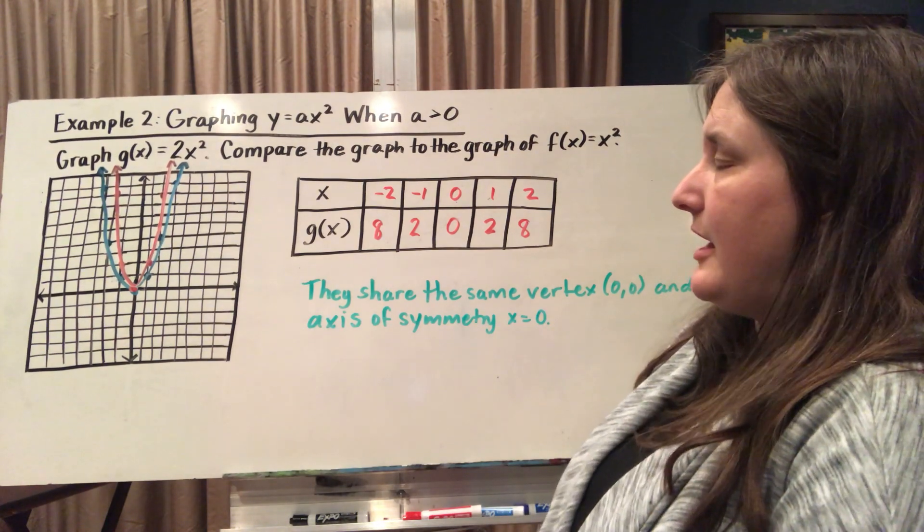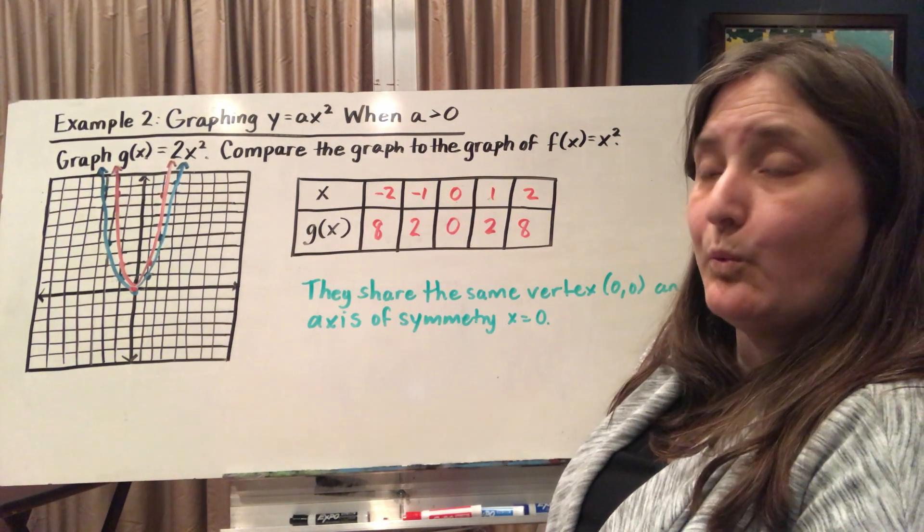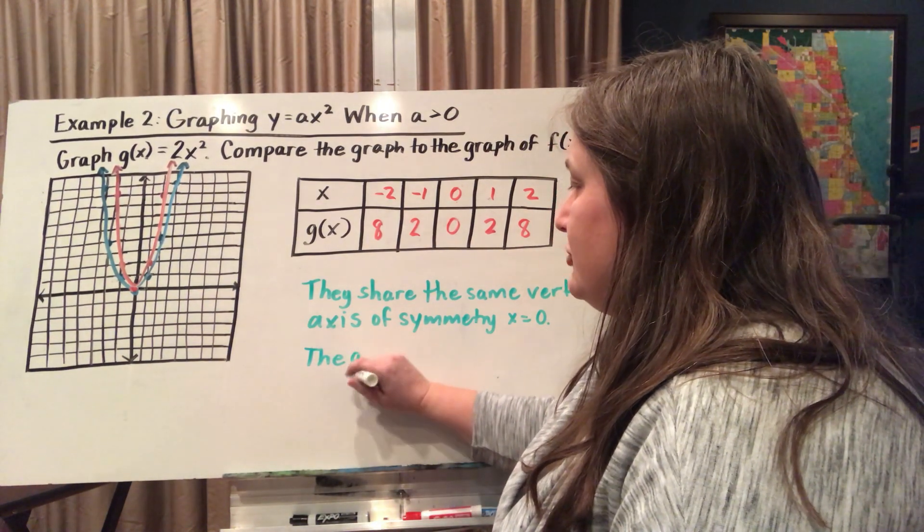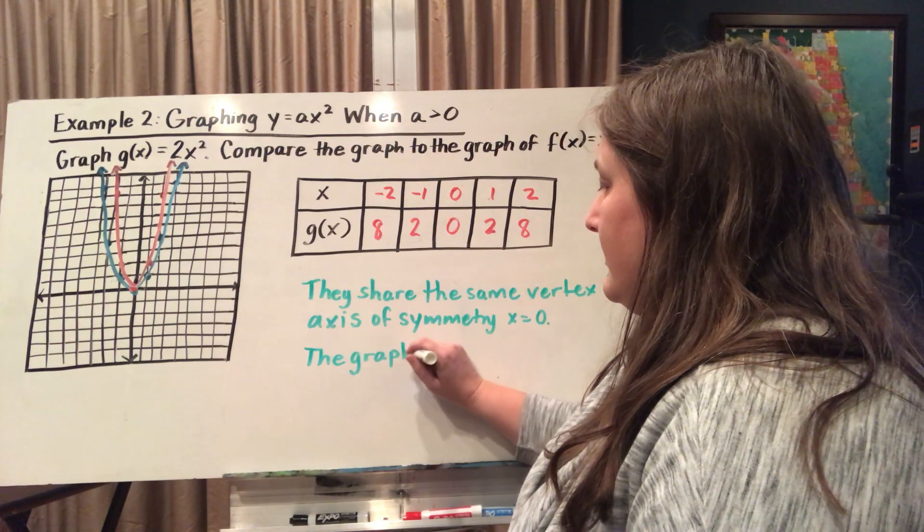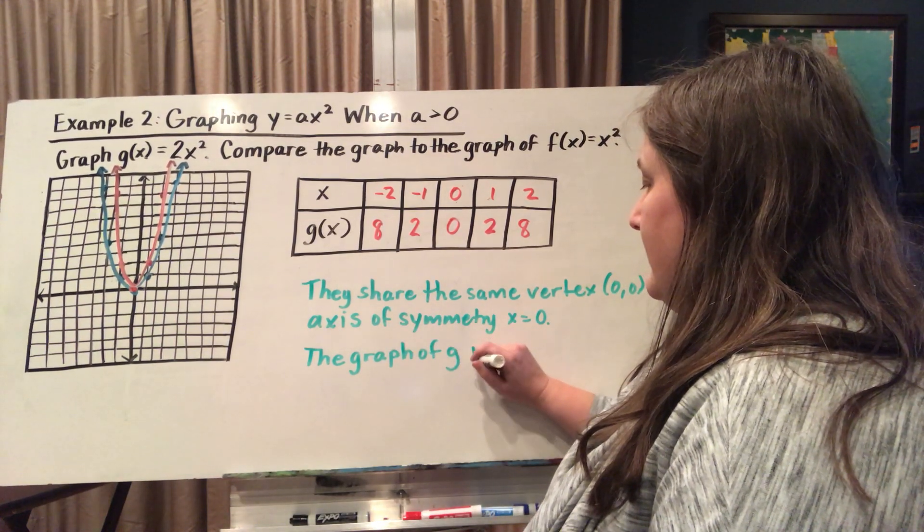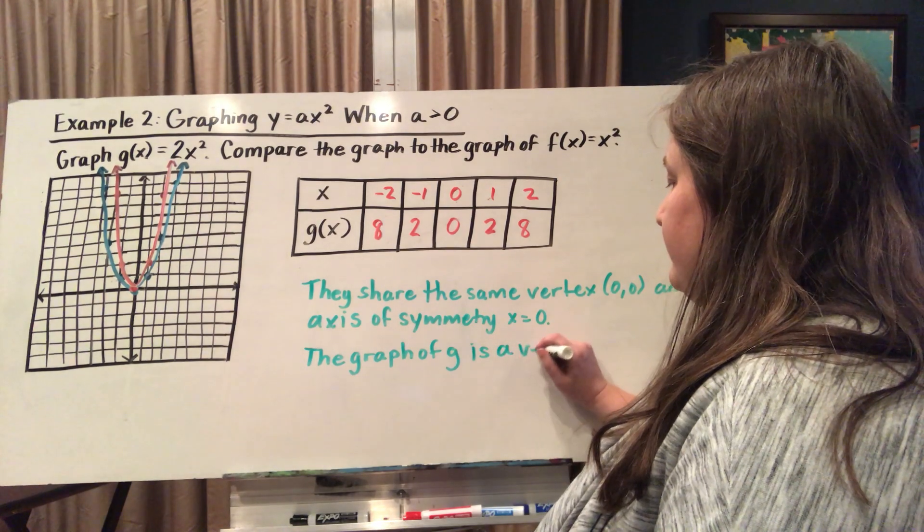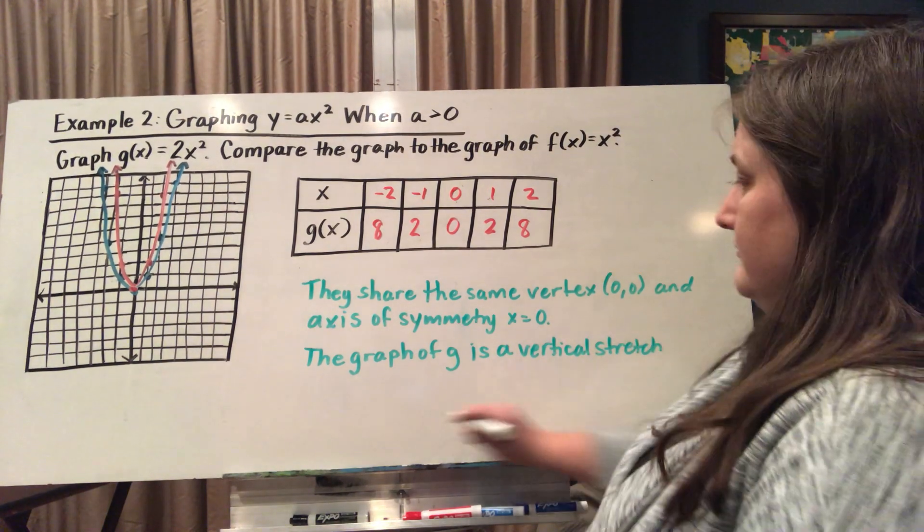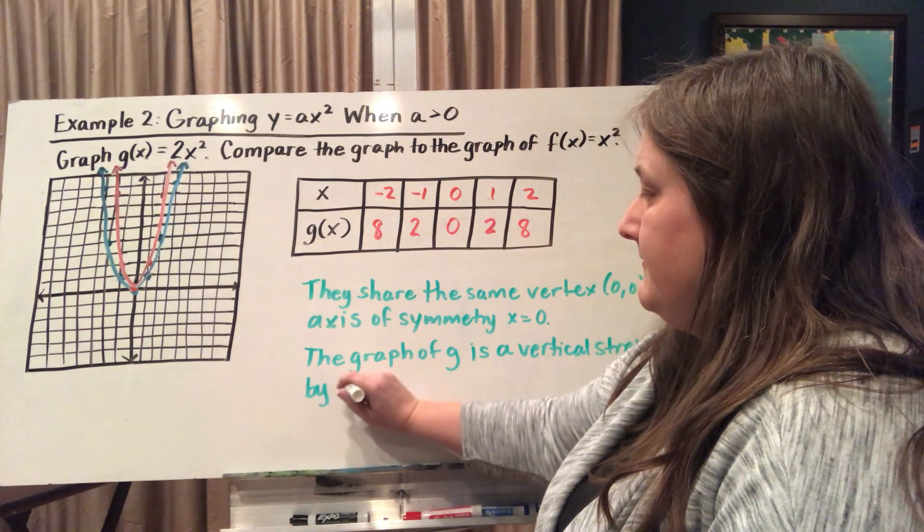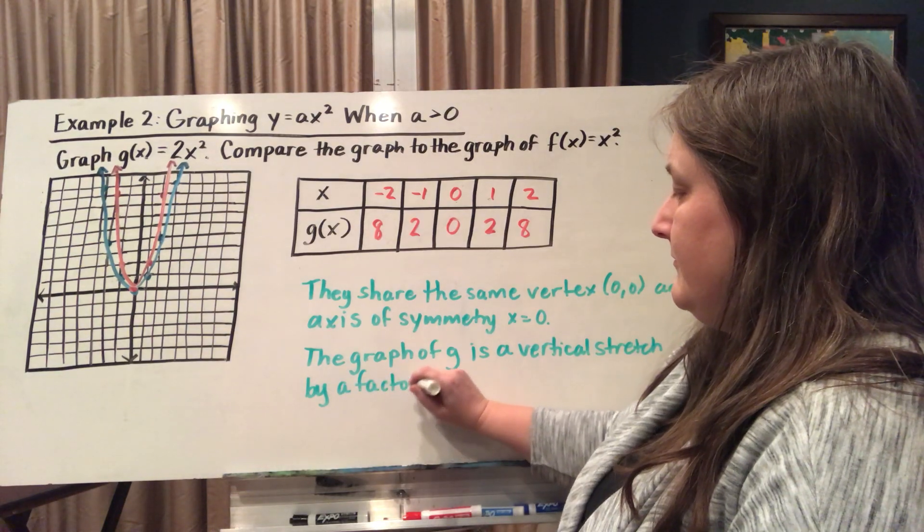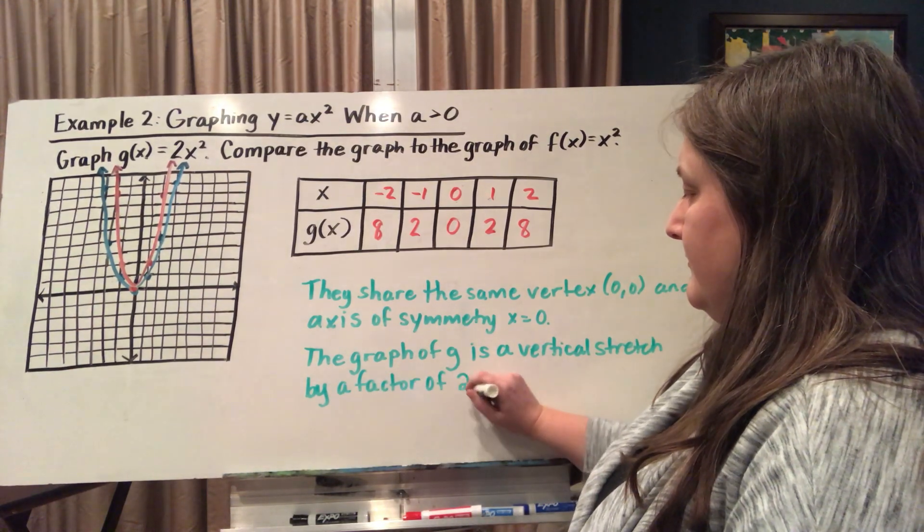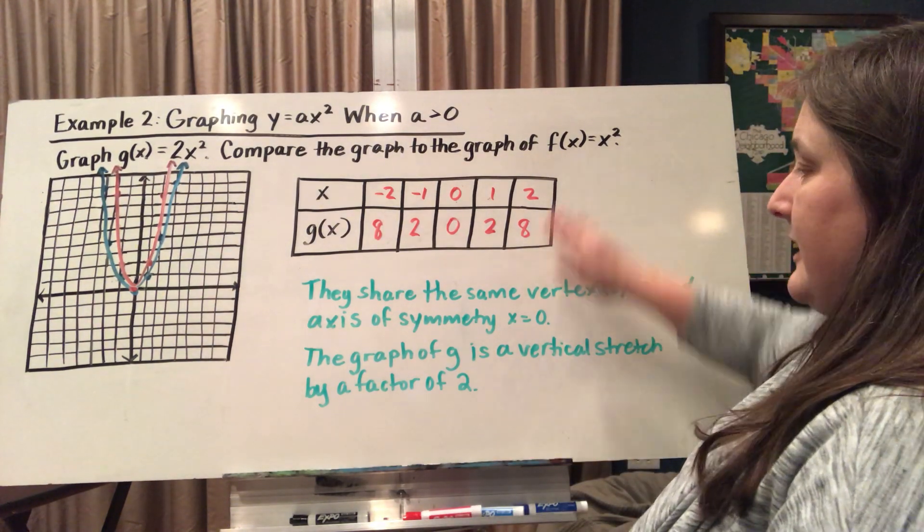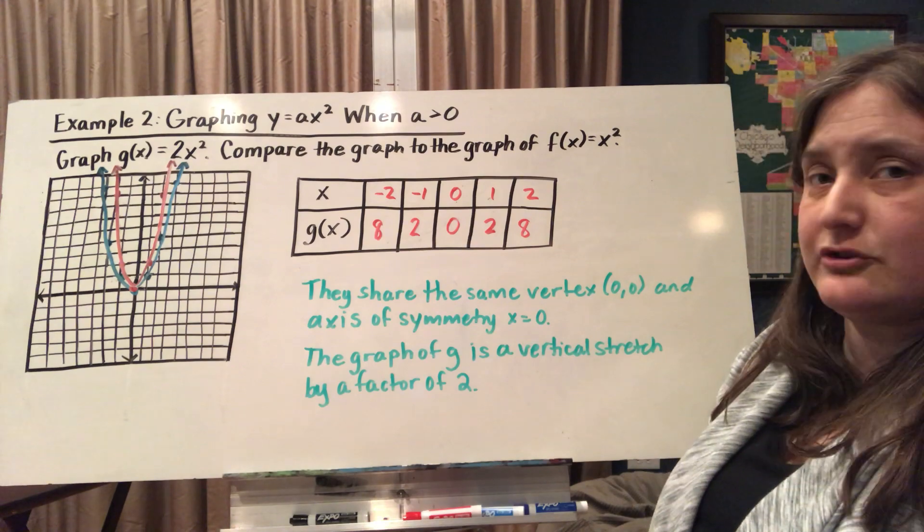I also notice that my parent function is a bit wider than my g(x) function. So the graph of g is actually a vertical stretch by a factor of 2. Comparing this to my f(x), it's a vertical stretch by a factor of 2.